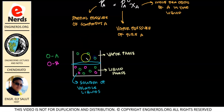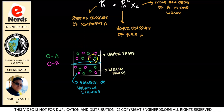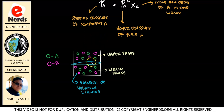Both component A and component B are volatile. And since both of them are volatile, there will be particles of both component A and component B in our vapor phase. So we have component A and component B in the liquid phase, and we also have component A and component B in the vapor phase. These vapor particles of both components exert partial pressures which contribute to the total pressure above the solution.